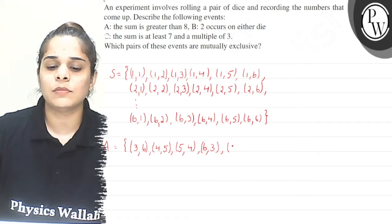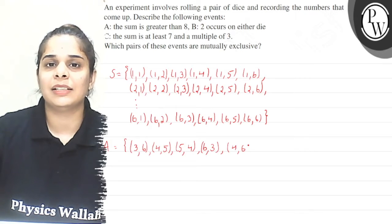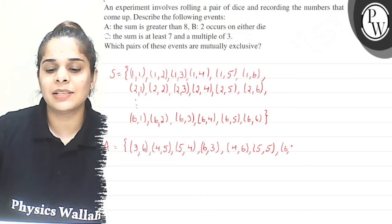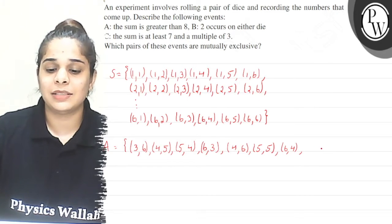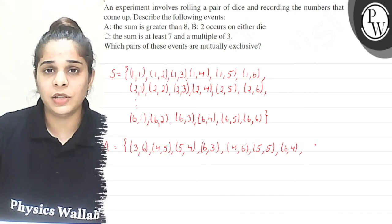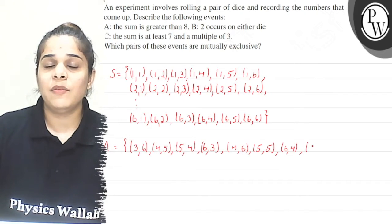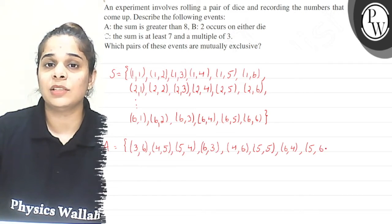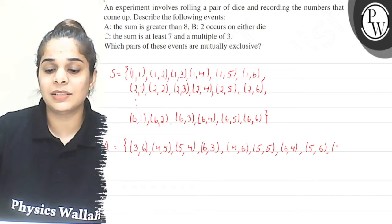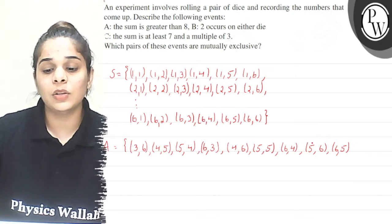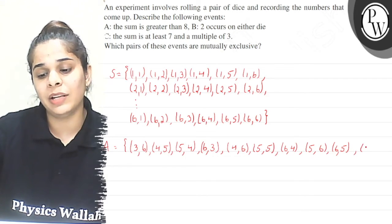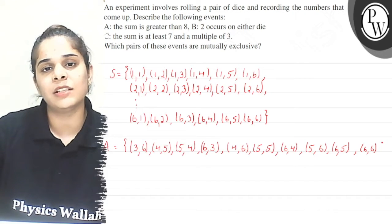For sum = 10, I'll start from 4: (4,6). Then (5,5), and (6,4) — those give sum 10. Now for 11: if first die is 5, second die is 6, sum is 11. If first die is 6, second die is 5, sum is 11. Those are the only two possibilities for sum = 11. For 12, I only have (6,6).